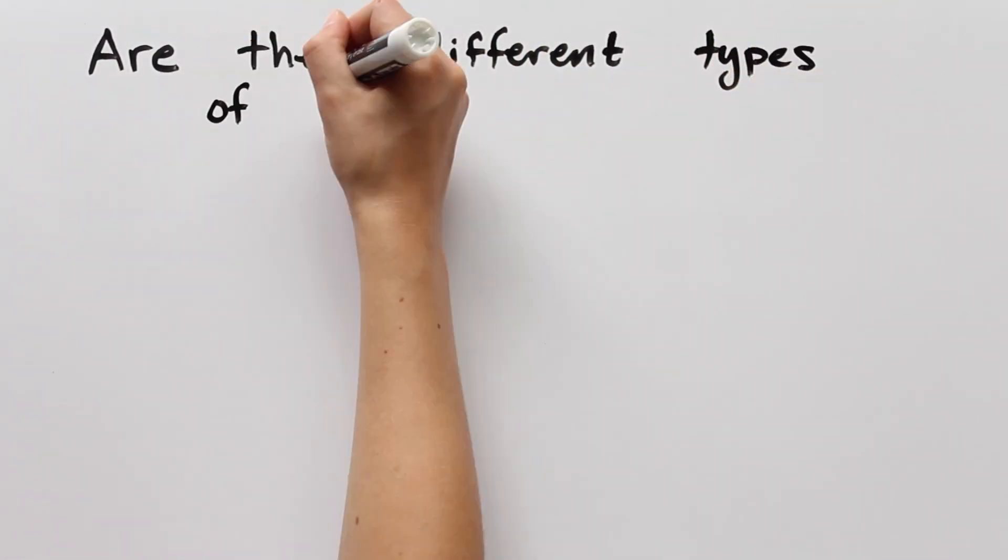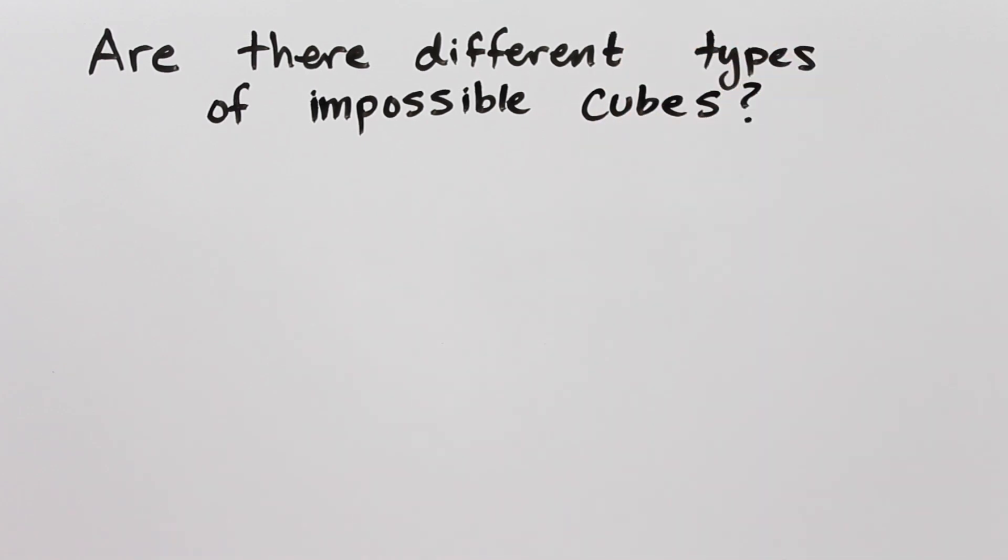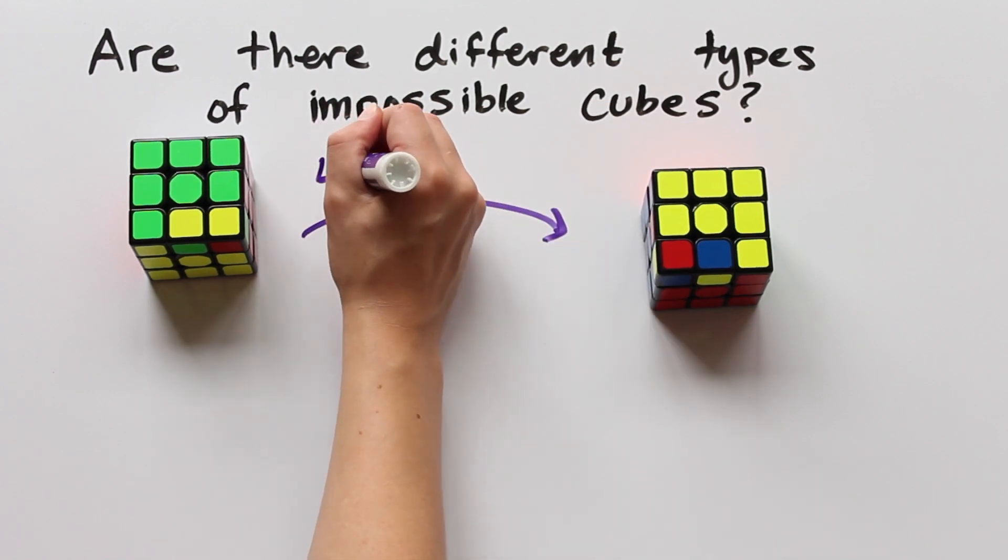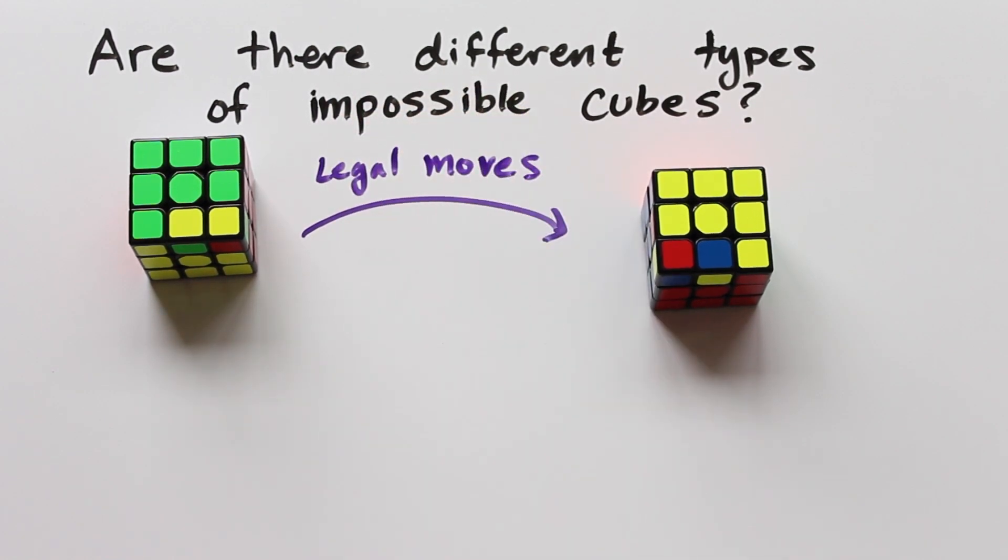But last time we ended with a question about different types of impossible cubes. Can we go from one impossible cube to another with legal cube moves? Today we will answer this question and get a peek at some important concepts in group theory. Let's get started.